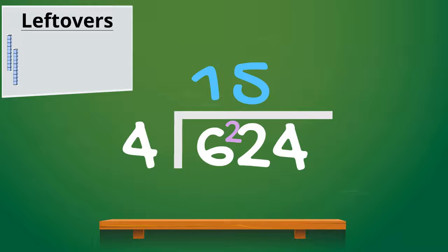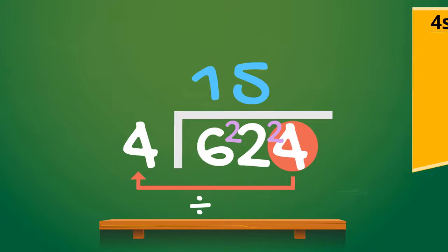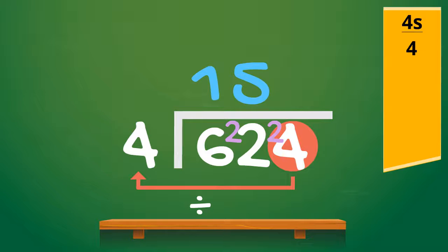And we just answered the division sum so we write that answer up above. What are we going to do with those 2 left over tens? Exactly the same thing as we did before. Those 2 tens or 2 multipacks are going to be broken up and added in to the units. So now instead of only having 4 units we're going to have 24 units to divide. Let's skip count up in 4s: 4, 8, 12, 16, 20, 24.